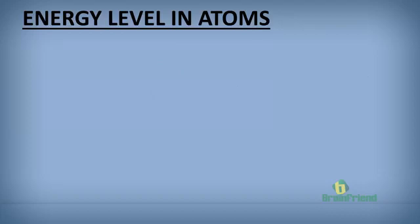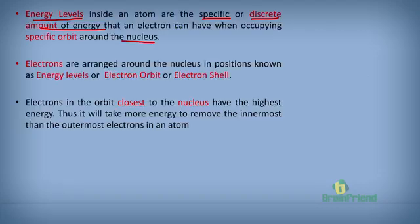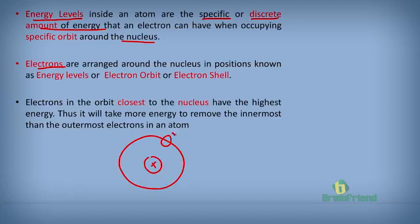Energy level refers to the specific or discrete amount of energy that an electron can have when occupying specific orbits around the nucleus. Electrons are arranged around the nucleus in positions known as energy levels, electron orbits, or electron shells. The nucleus is positively charged, and electrons, which are negatively charged, move around it in several shells, each revolving around the nucleus of the atom.